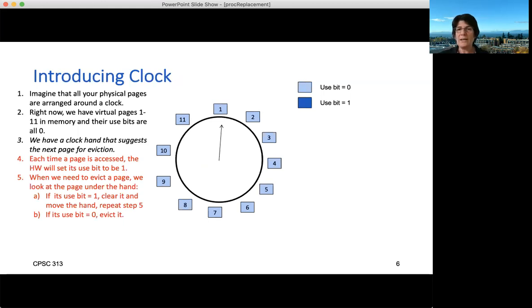So here's the algorithm. It's called clock, because it's modeled on the metaphor of an analog clock, where you have a round clock face and you have a hand sweeping around it. And the algorithm is actually quite simple. At any moment in time, the hand points to a particular physical page. When you need to allocate a new page, you look at the page that the hand is pointing to, and you check its use bit. If the use bit is zero, i.e. this page hasn't been used, then you say fine, I'm going to kick it out and I'll use that one.